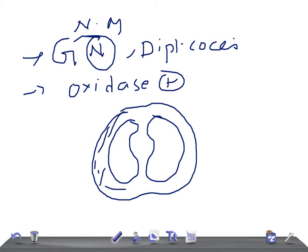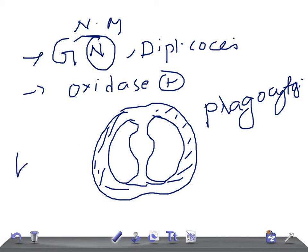They have a very important capsule. Do you know why bacteria have a capsule? Because they inhibit phagocytosis. That's the important function of the capsule. They have a large capsule.